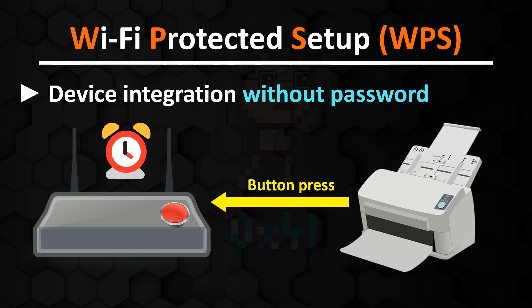Even though this may seem insecure, it is practically impossible to attack. An attacker usually doesn't know when the button is pressed, meaning he would have to be permanently within range of the network and wait for the button to be pressed on the router. Furthermore, new devices are rarely added to the home network. In larger corporate networks the situation may be somewhat different, but the infrastructure protects you. In addition to pressing a button, there is also the option of integrating devices via a personal identification number, though in practice the push-button method is the most common.